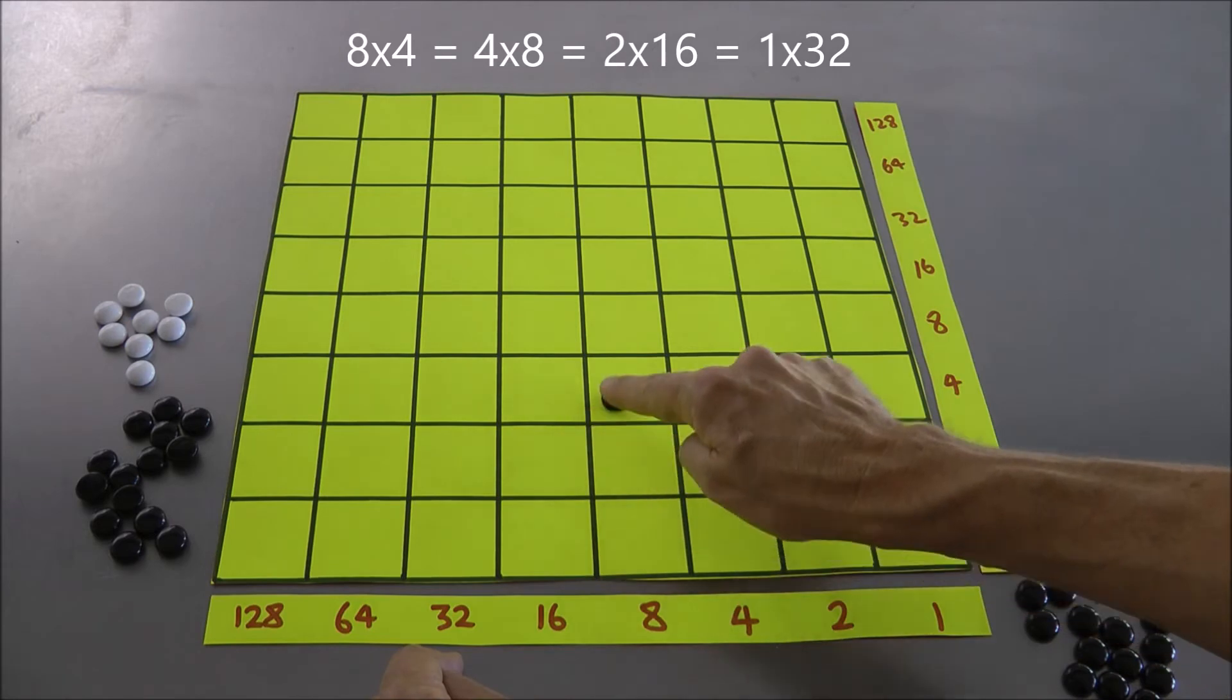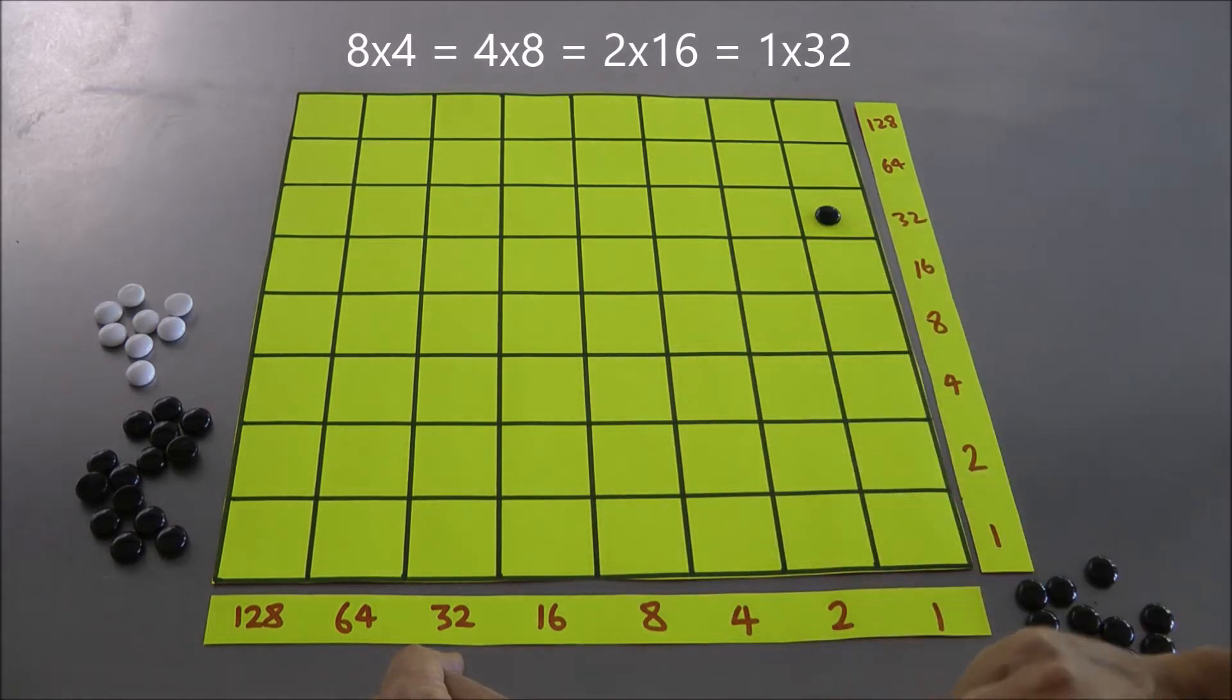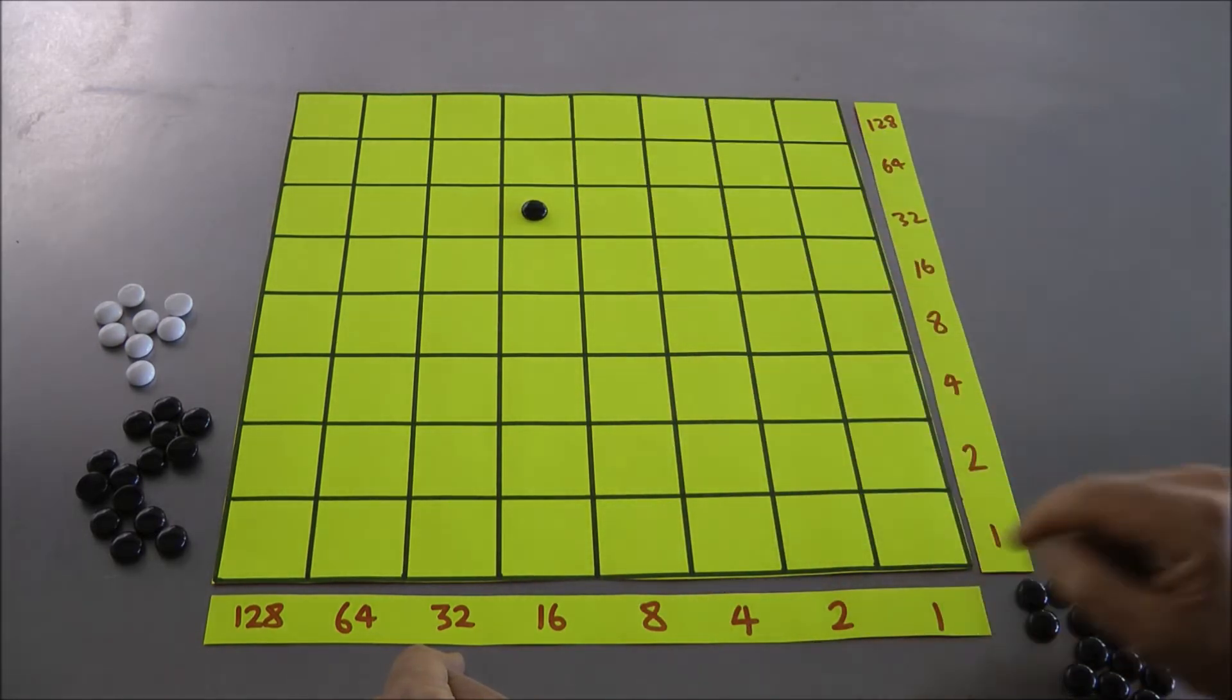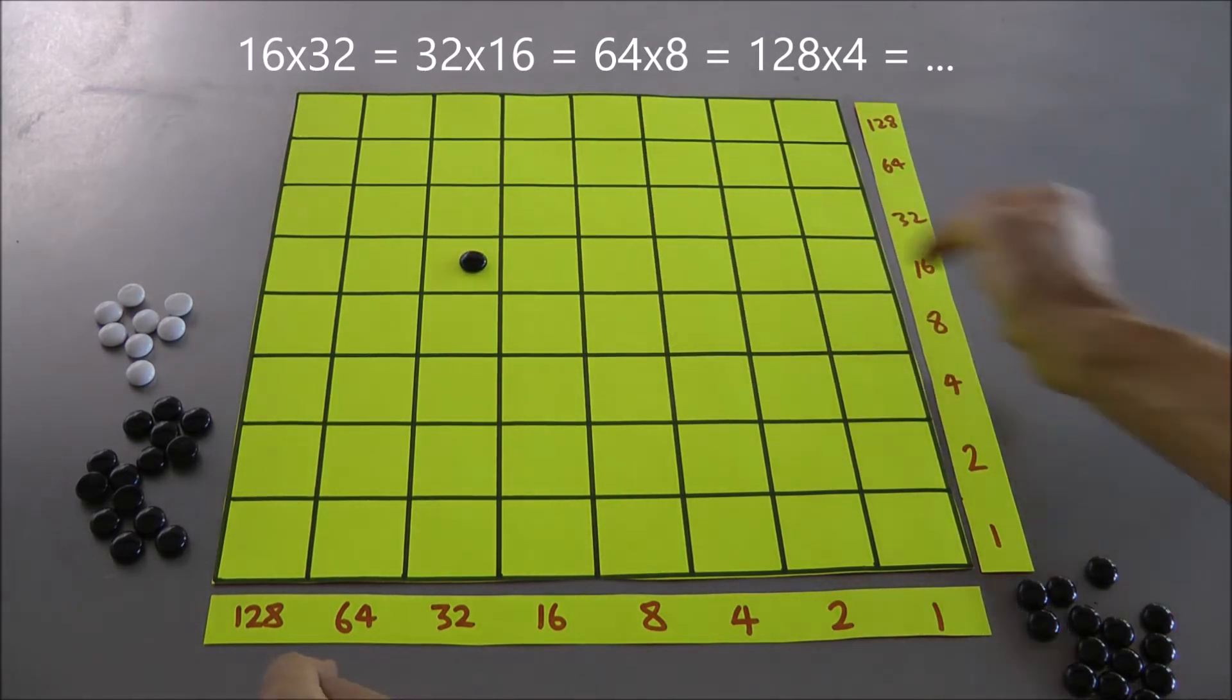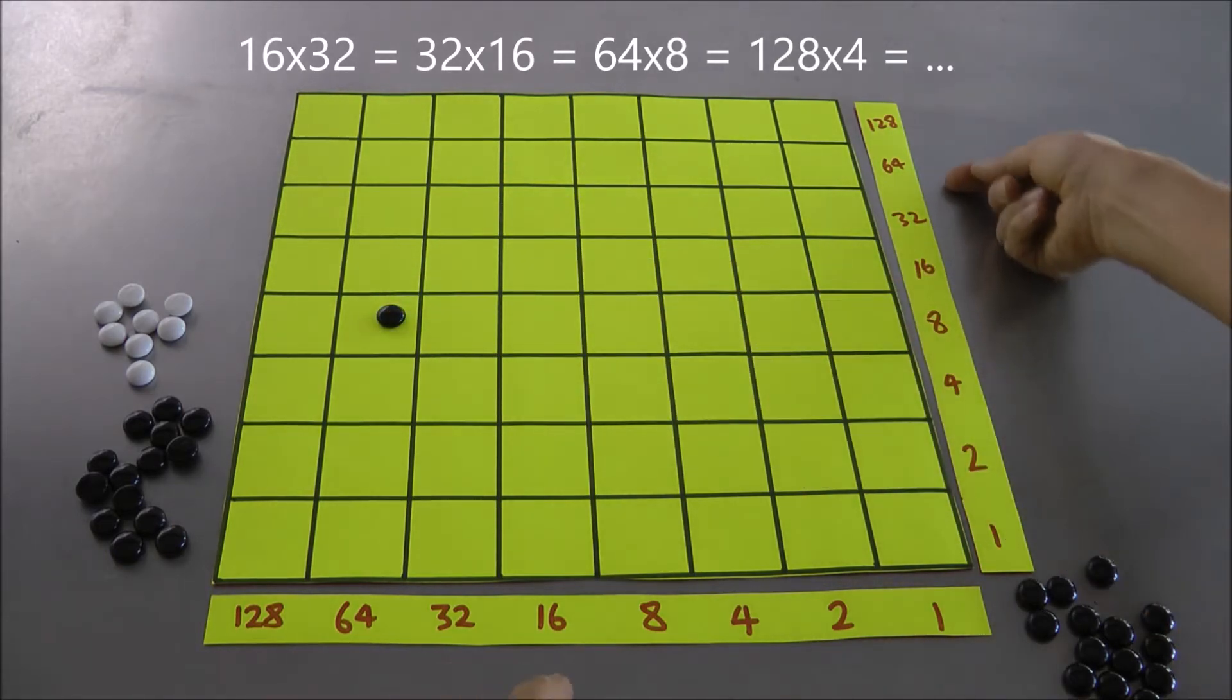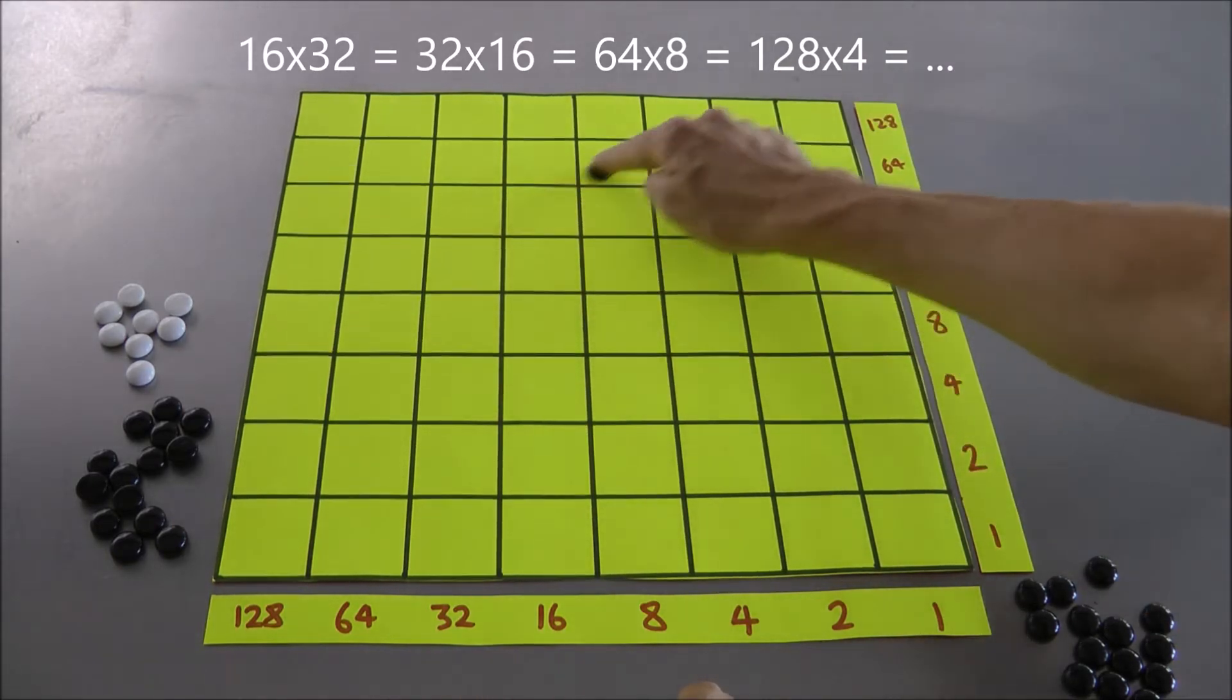That all the dots along this diagonal are worth the same value. If that's true anywhere. This is currently 16x32. If I halve and double, same value. If I halve and double, same value. If I double and half, double and half, double and half. Boom, boom, boom. Same value.